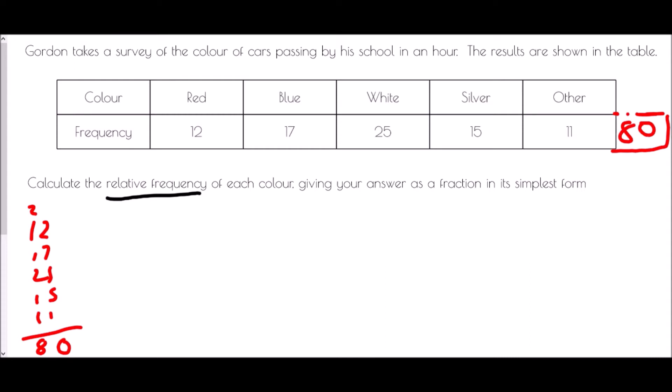And so if we want a relative frequency, well the relative frequency of red is that he saw 12 of them out of 80 in total. 12 out of 80 will be 6 out of 40, and if we simplify again it will be 3 out of 20.